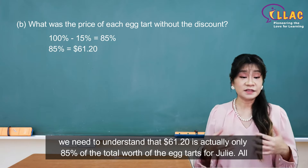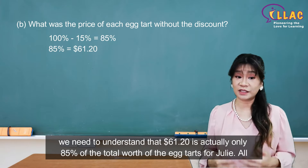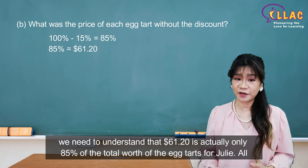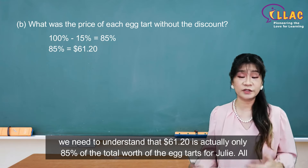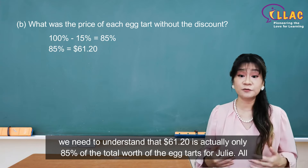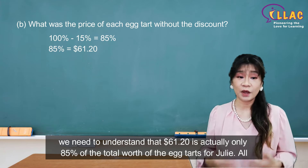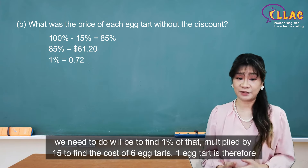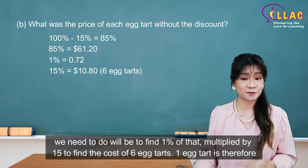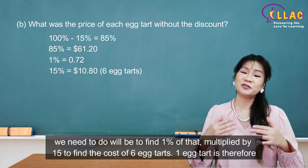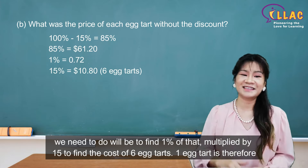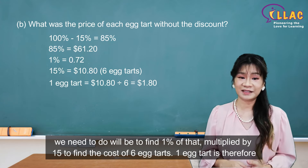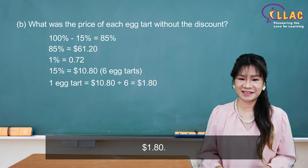To find the price of each egg tart, we need to understand that $61.20 is actually only 85% of the total worth of the egg tarts for Julie. All we need to do is find 1% of that, multiplied by 15, to find the cost of 6 egg tarts. One egg tart is therefore $1.80.